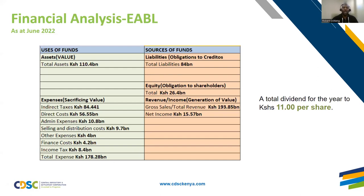EABL paid a dividend of 11 cash per share. You can earn returns either from capital gains or dividends. Financial analysis reveals the health of a company, and you should compare figures from previous years, the last five to ten years, to identify trends that are logical and make sense.